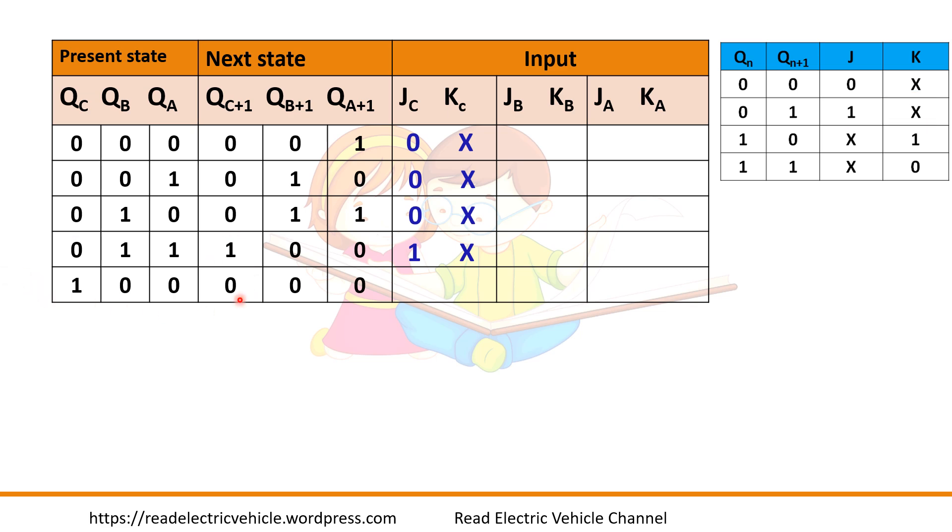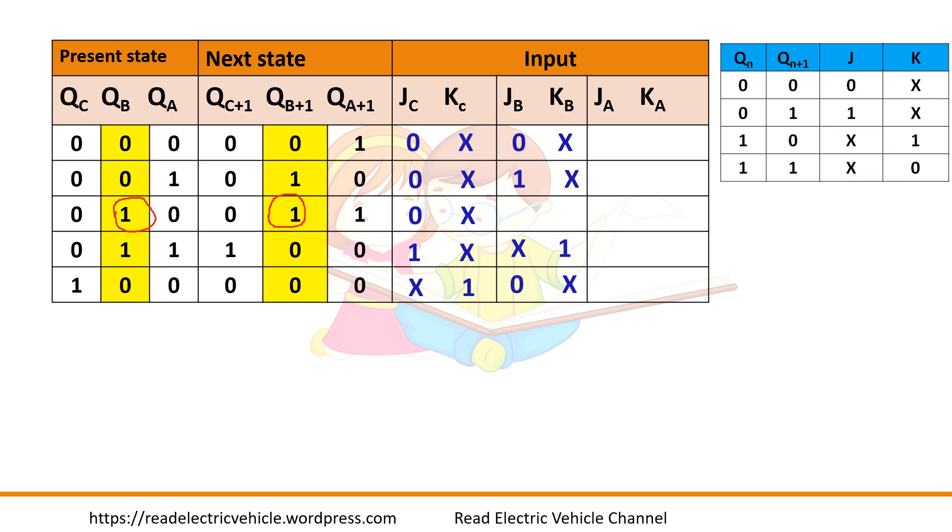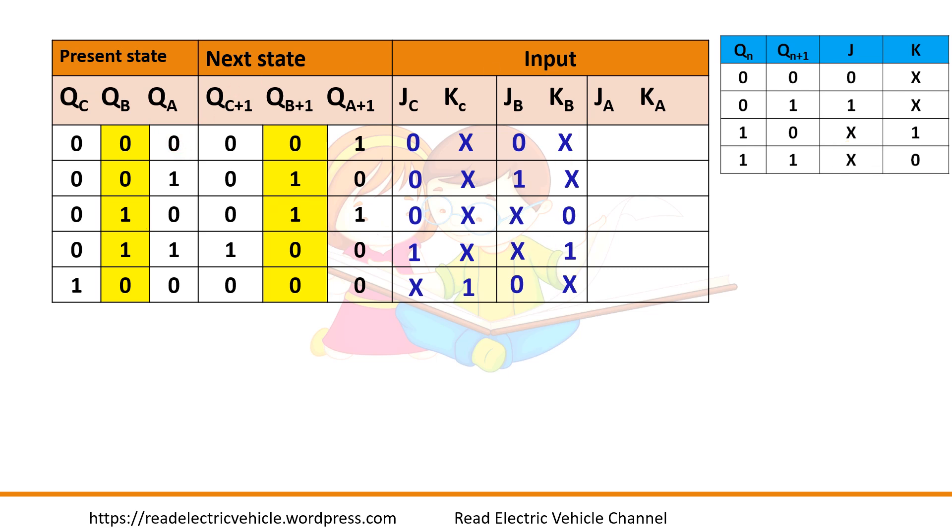Then you have 1, 0, X, 1. So you fill up the table like this for all the flip-flops, all the three flip-flops. For second B flip-flop 0, 0 means 0, X. We can fill up like this. 1, 1 means X, 0. Then for A flip-flop 0, 0 means 0, X. Then 0, 1 is 1, X. 1, 0 is X, 1.